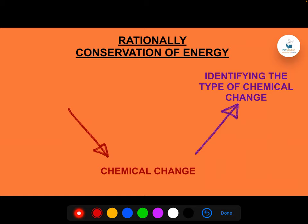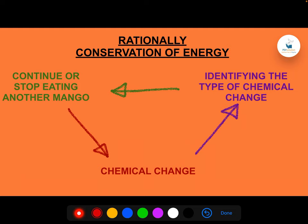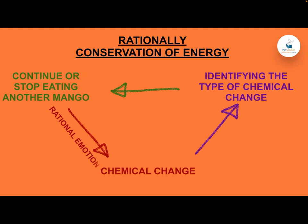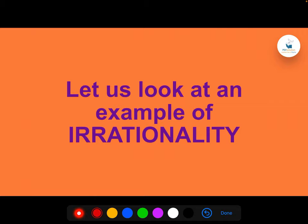From identifying the chemical change, that is the starting point for any independent, discrete act — it brings the next set of action, whether to continue or stop eating another mango. This was the example of rationality: rational emotion out of an action, rational thinking out of a sensation, and rational action out of perception — termed as rational creativity, because every action is a new action in this cycle.